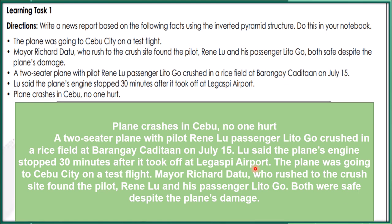This is the correct answer. Start with the title: Plane Crashes in Cebu, No One Hurt. Then the first sentence: A two-seater plane with pilot René Lu and passenger Lito Go crashed in a rice field at barangay Kaditaan on July 15. Next: Lu said the plane's engine stopped 30 minutes after it took off at Ligaspis Airport. Then: The plane was going to Cebu City on a test flight. Mayor Richard Datu, who rushed to the crash site, found the pilot René Lu and his passenger Lito Go, but both were safe despite the plane's damage.